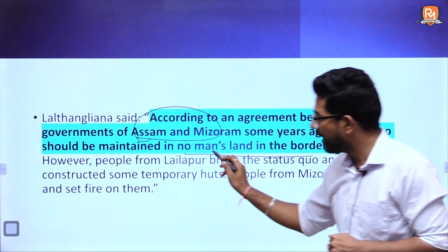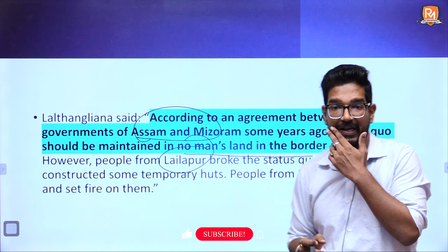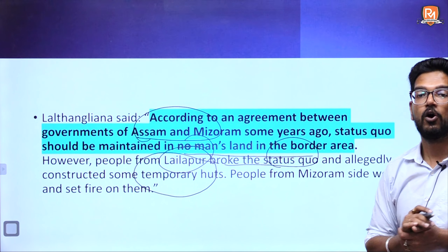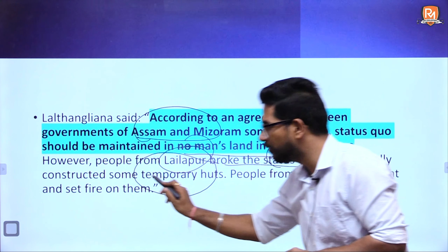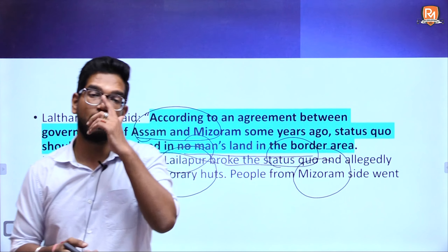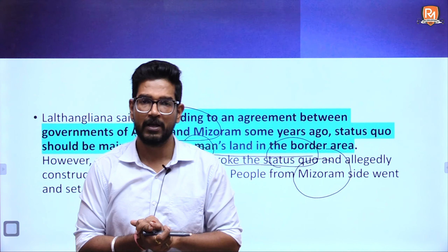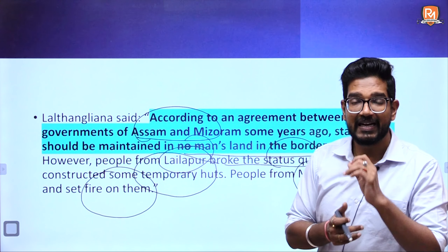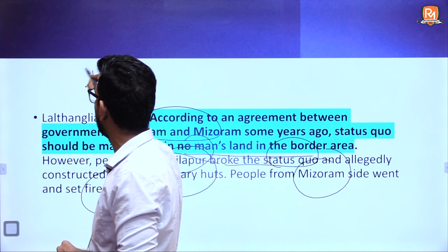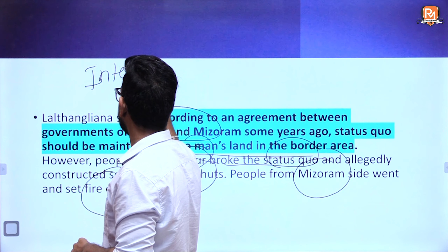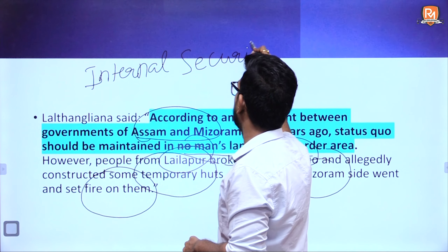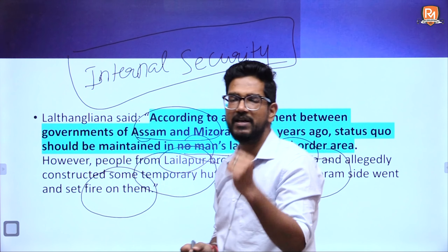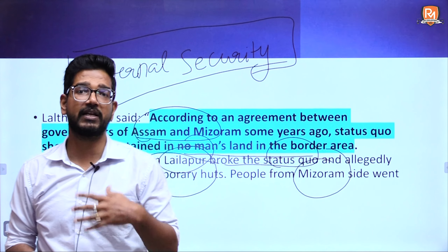Among the things that recently triggered this dispute, one incident was on October 9th, when a farmer's hut and betel nut plantation belonging to a Mizoram resident was set on fire by people from Assam. The second incident occurred in Cachar, where people from Lailpur threw pellets at Mizoram police personnel. This is why a tussle started between the two states, as Mizoram people began retaliating.